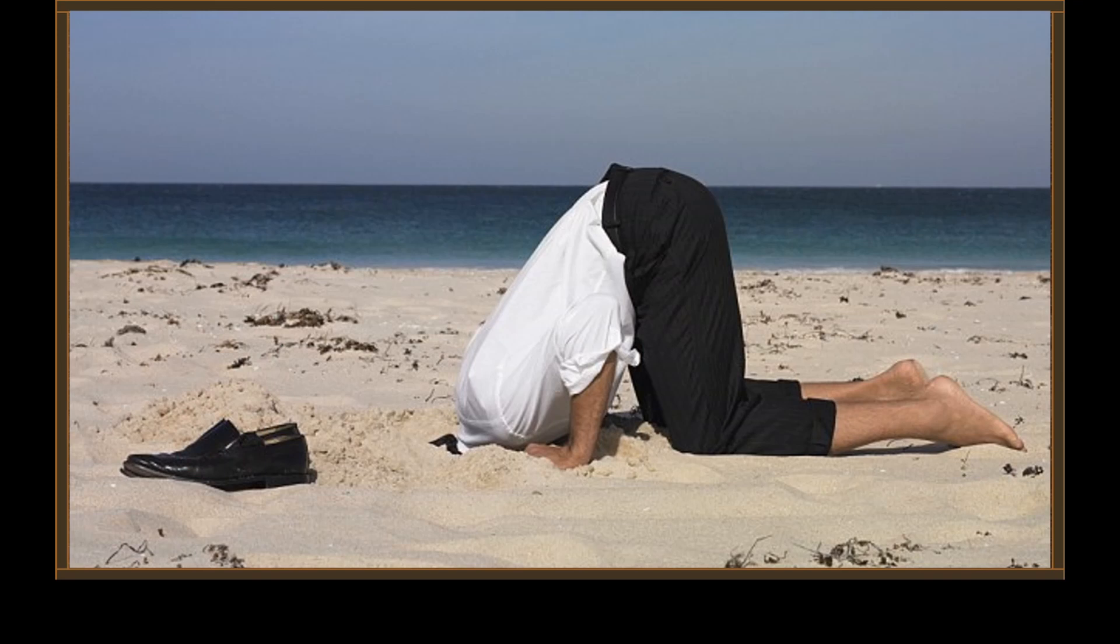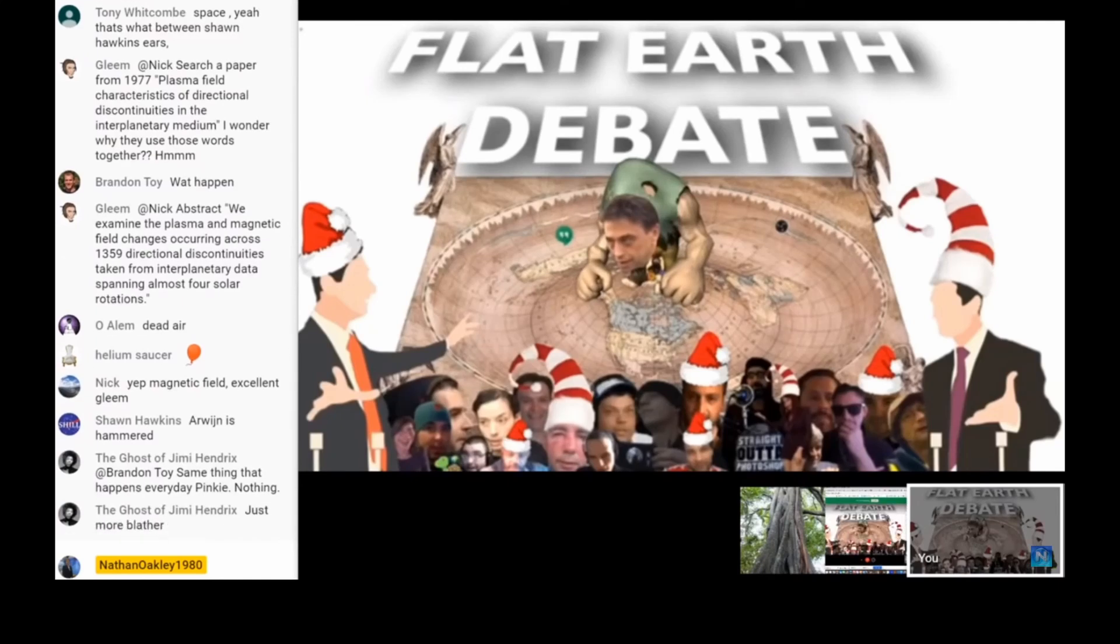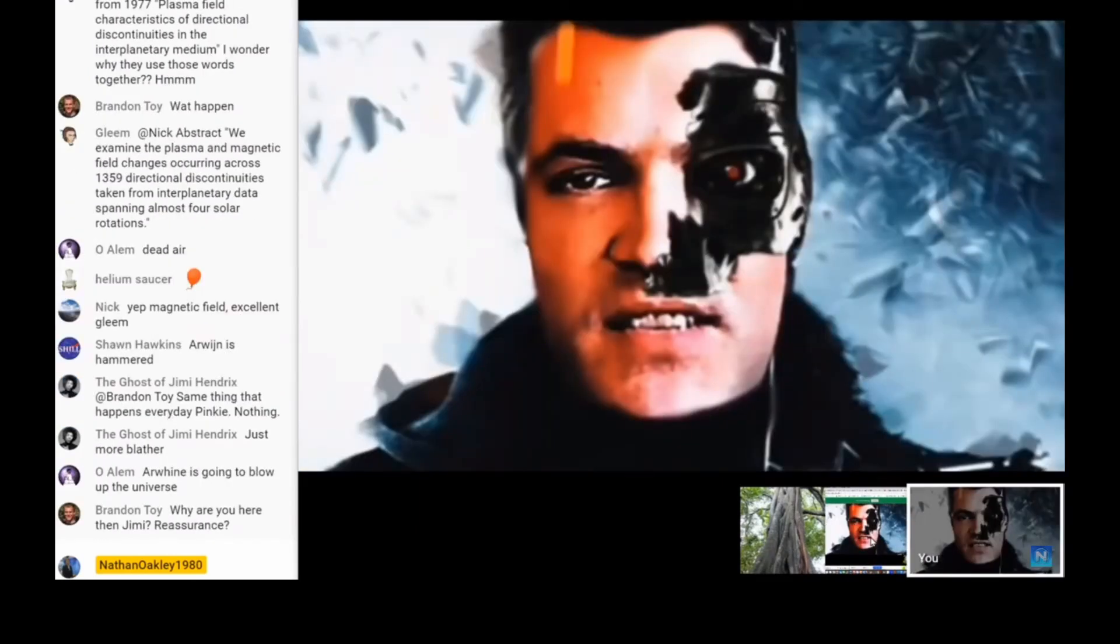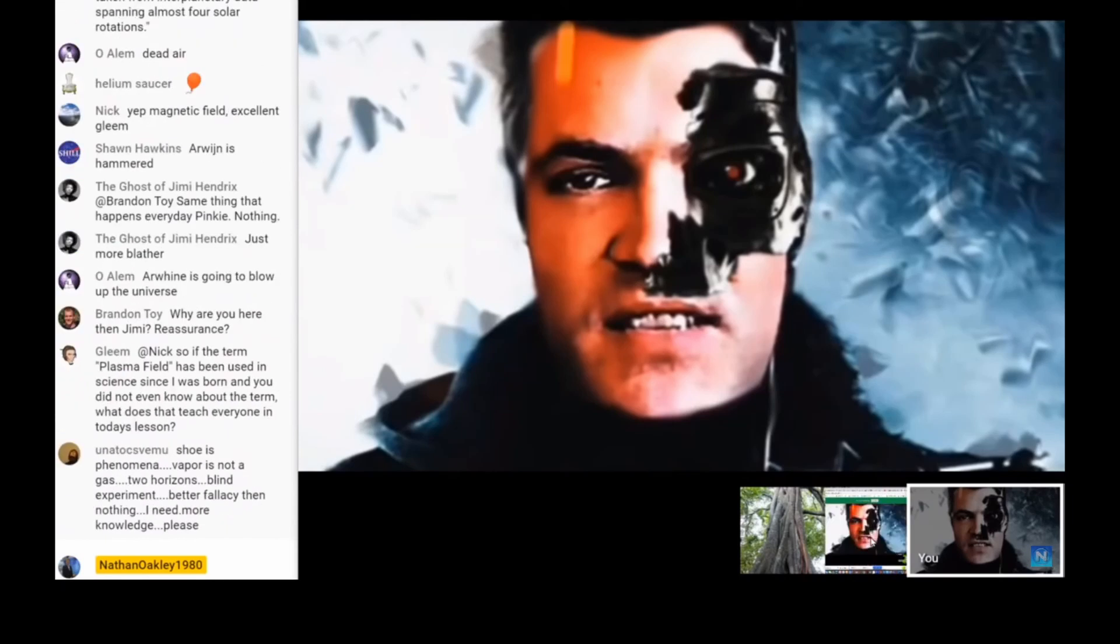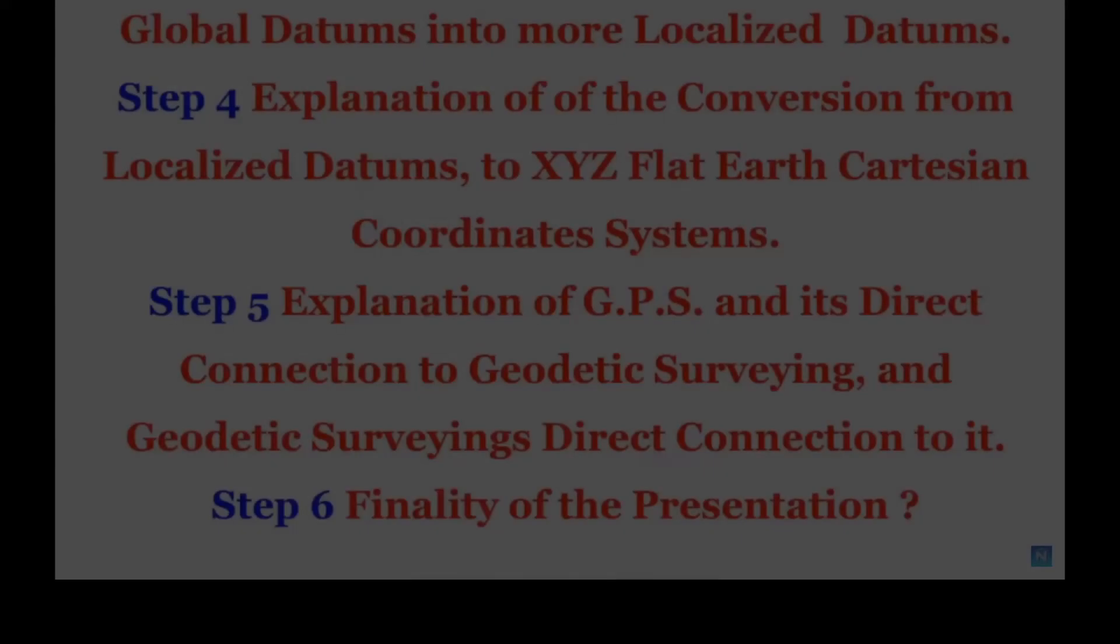As we join the action, Nathan and his band of merry idiots are desperately trying to find Brian. Brian. Hey Brian. Hello Nathan, we've got you. Now can you still hear me? Yeah, okay. I just wanted to make sure. So step one, explanation of the globe earth assumption.